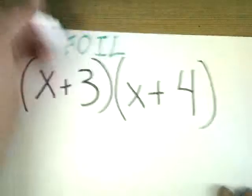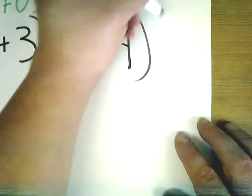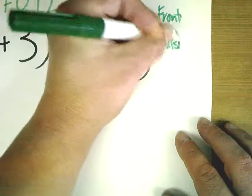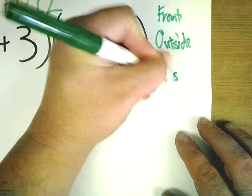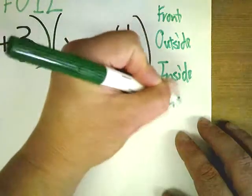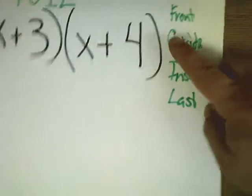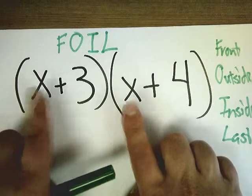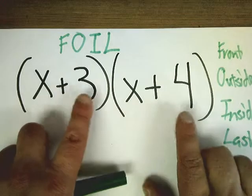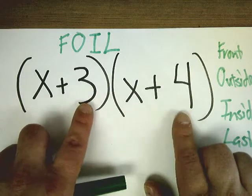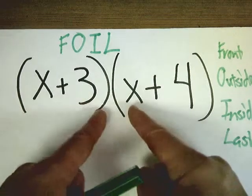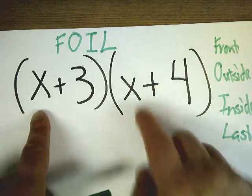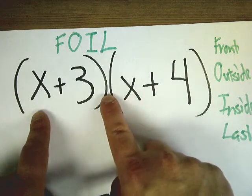The FOIL stands for front, outside, inside, and last. The front two numbers of these sets, the front numbers are here. These are the last numbers in the set. The inside would be the two that are inside, and the outside would be on the outside. Since they're touching each other, by the way, we're going to multiply here.